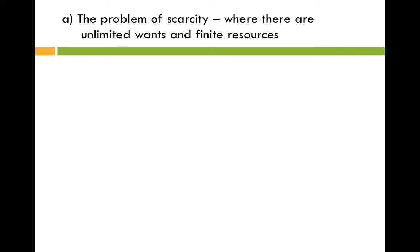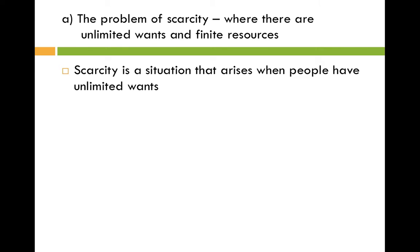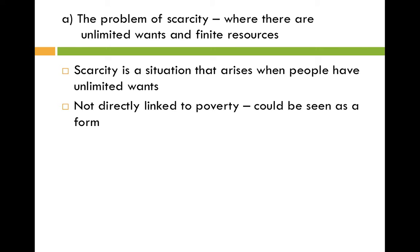Point A: the problem of scarcity, where there are unlimited wants and finite resources. Scarcity is a situation that arises when people have unlimited wants in the face of limited resources. It's not directly linked to poverty, but some people would argue that poverty is an extreme form of scarcity because individuals are lacking the basic necessities of life.